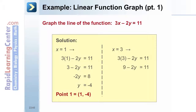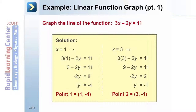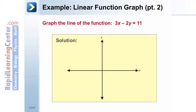To find the second point, plug x equals 3 into the original equation to get 9 minus 2y equals 11. Subtract 9 from both sides, then divide by negative 2 to get y equals negative 1. The second point is (3, negative 1). Next, plot points (1, negative 4) and (3, negative 1) in the coordinate plane. Lastly, draw a line through the points — this line is the graph of the function 3x minus 2y equals 11.